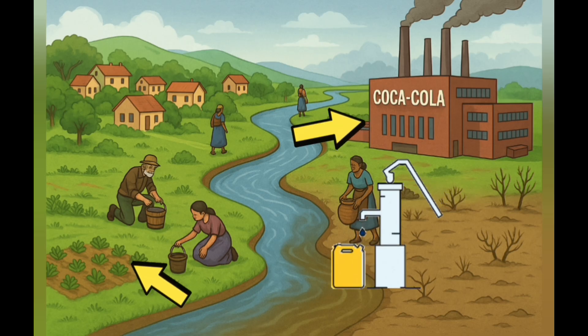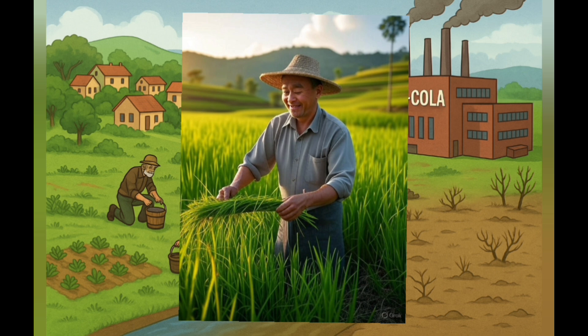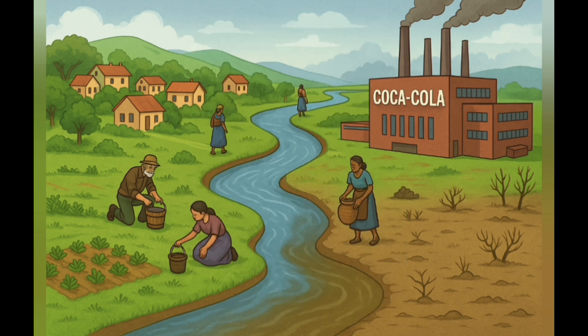If we talk about agriculture, crops need the right amount of water. Too much water causes floods — heavy rainfall damages the crop roots. Too little water causes droughts — little or no rainfall leads to drought conditions.